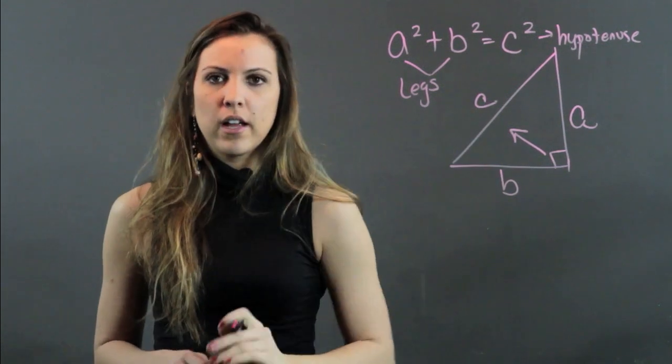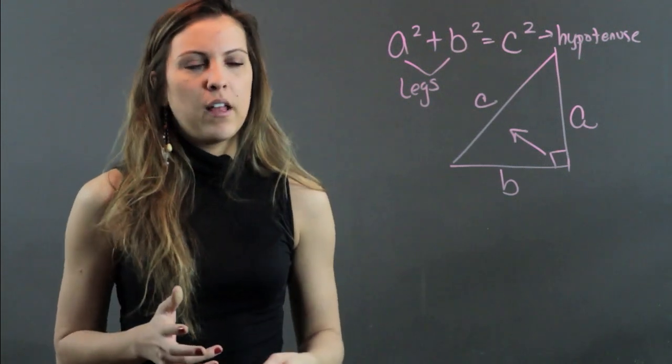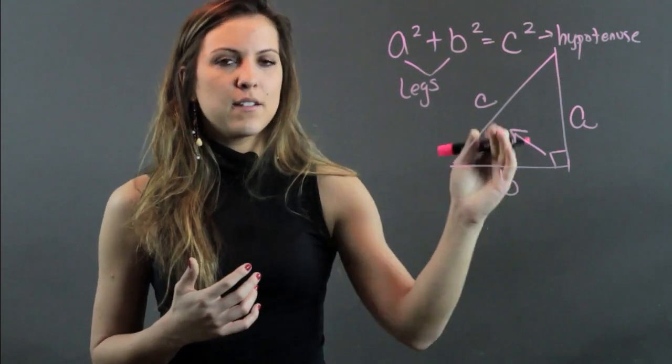So first you have to make sure you have your triangle labeled correctly. A and B being the legs and C being the hypotenuse. Now to use the Pythagorean theorem, it depends on which two sides of the triangle you're given.